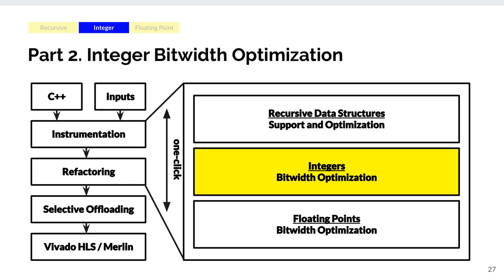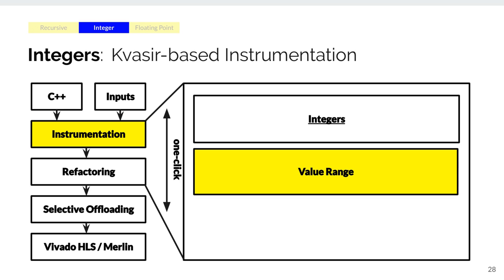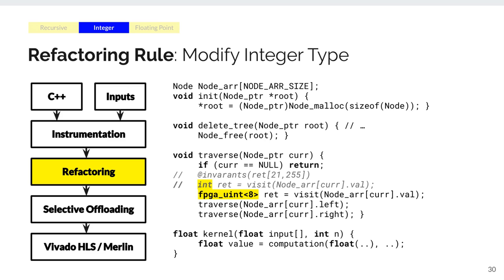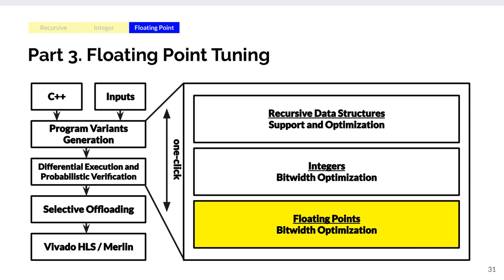In addition to making code run on FPGA, resource efficiency is another important concern. Traditional FPGA design requires programmers to define bit widths for their variables. HiTo Refactor automatically finds the minimum bit width for integers and floating points. For integers, we monitor FPGA-specific dynamic invariants like value ranges using coverage-based instrumentation, then modify the integer type with a custom bit width to represent its maximum value. For floating-point tuning, we design a probabilistic, differential execution-based approach that generates program variants with different precision via source-to-source transformation.